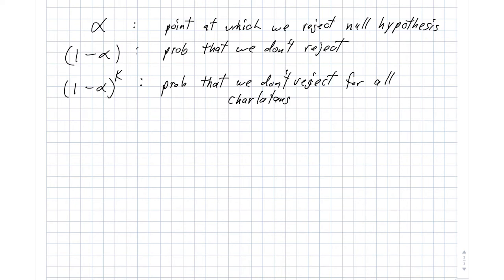So we're assuming that our charlatans are independent here. So these first two measures, the alpha and the 1 minus alpha, these are with respect to individual charlatans. And then when we ask what the aggregate event is of not rejecting all of the charlatans, that's this probability right here.